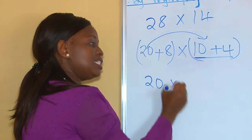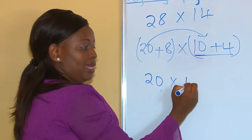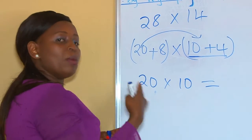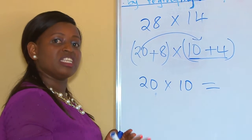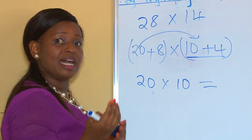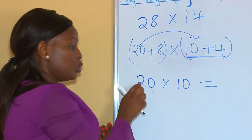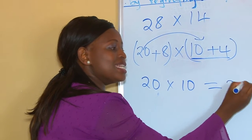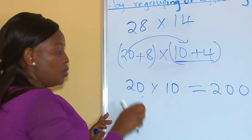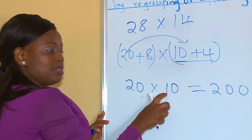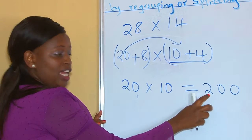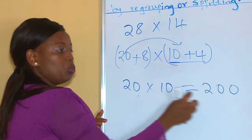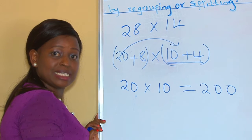We begin with 20 times 10. When you are multiplying the powers of 10, it is easy — because 10 times 10 is 100. So 20 times 10 is 200. Because 2 times 1 is 2, and then there are two zeros, so it becomes 200.